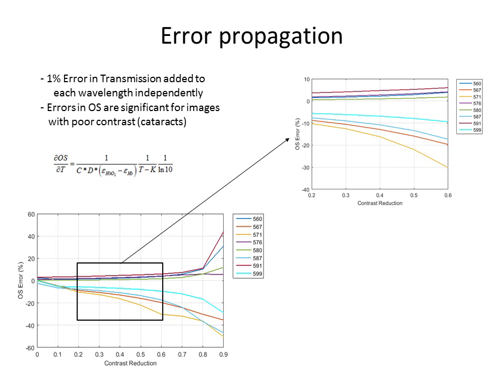You wouldn't have this if you use the model without the contrast reduction. This is basically because of this factor here. This is the sensitivity of oxygen saturation to errors in transmission. If you don't have this factor, that you wouldn't have in a regular Beer-Lambert law, you will still have error propagation, but it won't be too big of a problem. But once you introduce the contrast reduction, when K increases, this will be small, so this will be big. It will escalate quite a lot there.